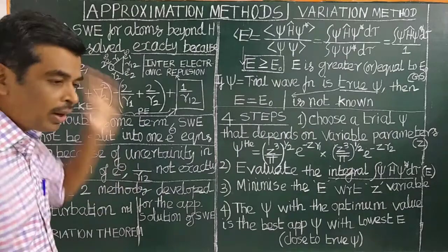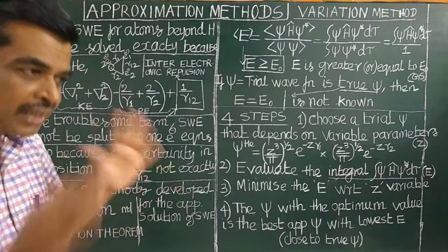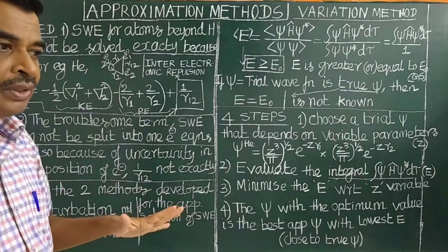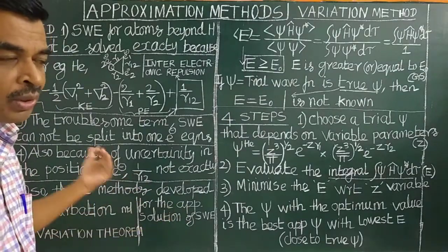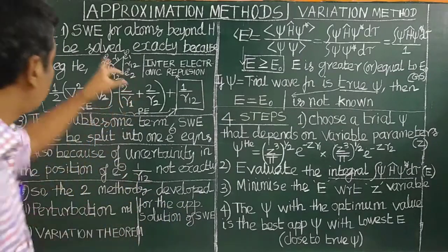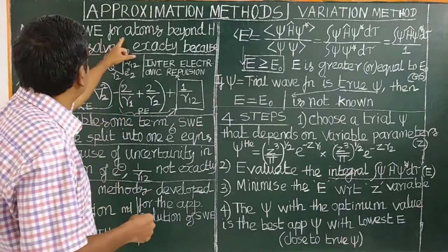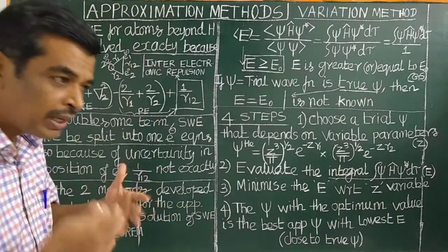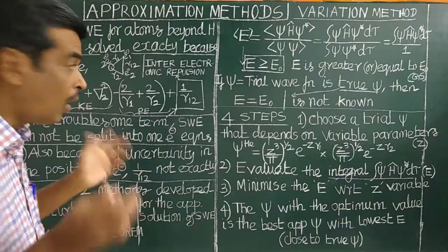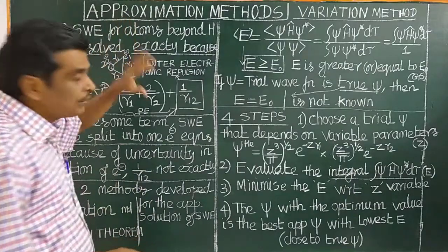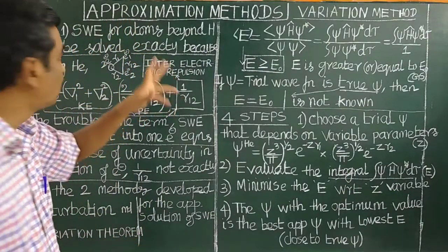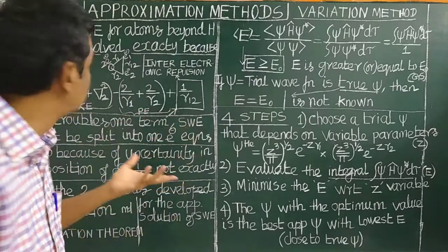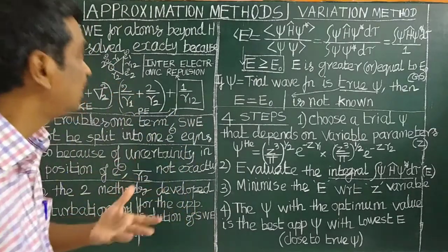The Schrödinger wave equation for the hydrogen atom can be solved exactly. However, the Schrödinger wave equation for multi-electron atoms beyond hydrogen cannot be solved exactly.